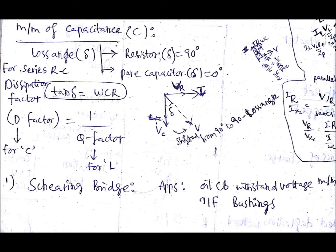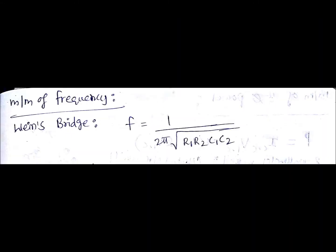If we take one bridge which is used for measurement of capacitance, that is Schering bridge. Its applications are oil circuit breaker withstanding voltage measurement and transformer bushings voltage measurement. This bridge is used in those applications.